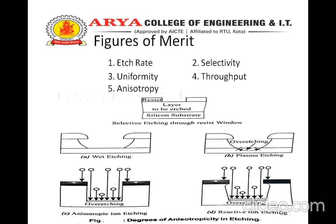The figures of merit for etching are as follows. First is etch rate. Etch rate refers to the rate of removal of the selected material. It is defined as thickness per unit time. A high etch rate is desirable, but it renders a process difficult to control. Batch processing results in reduced etch rate. The uniformity of etch rate is measured in terms of percentage variation of etch rate.